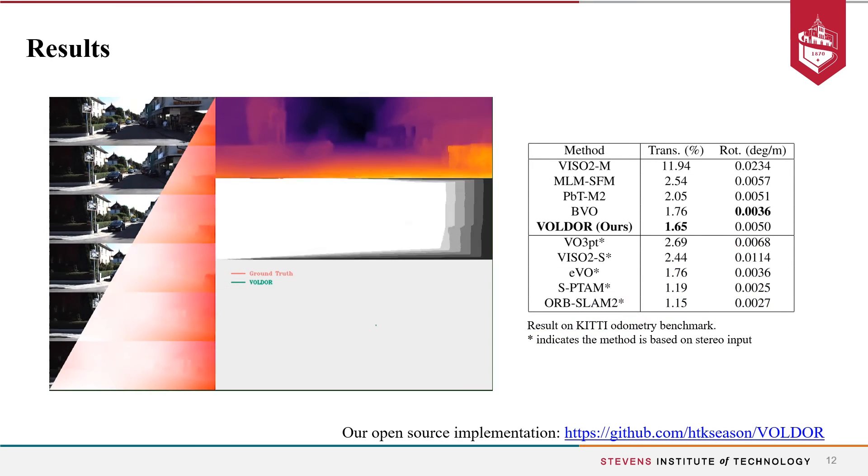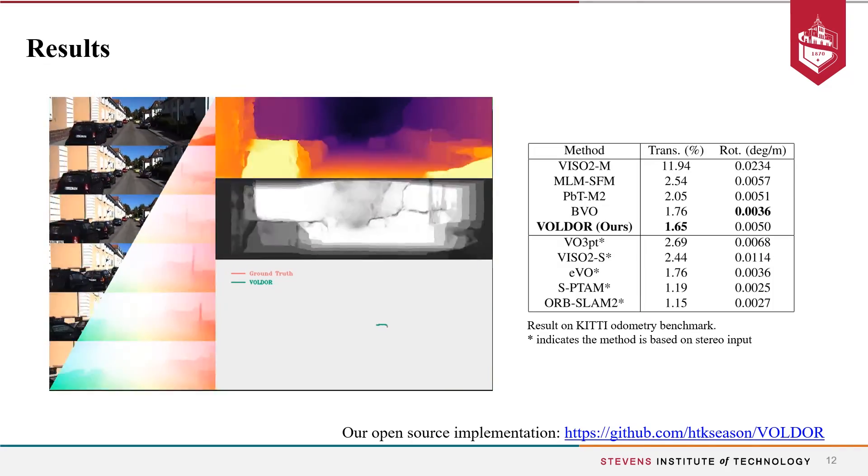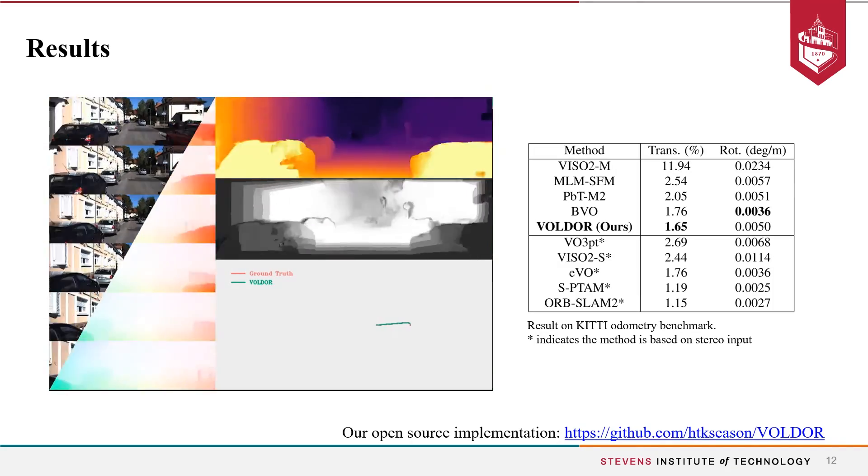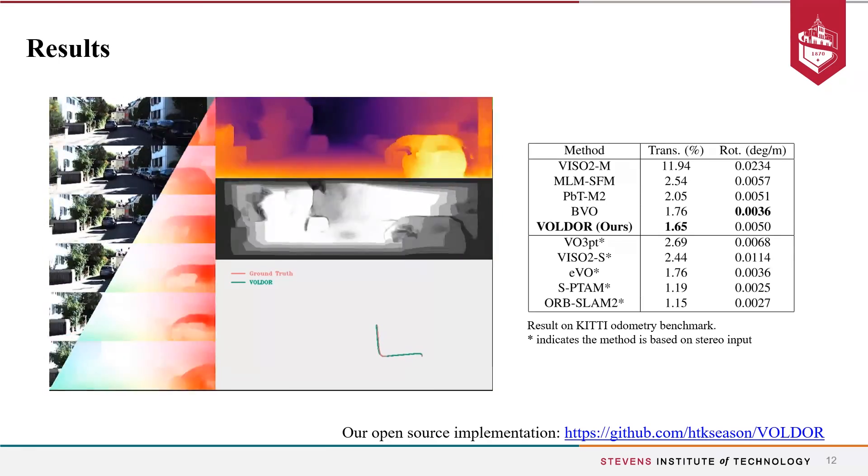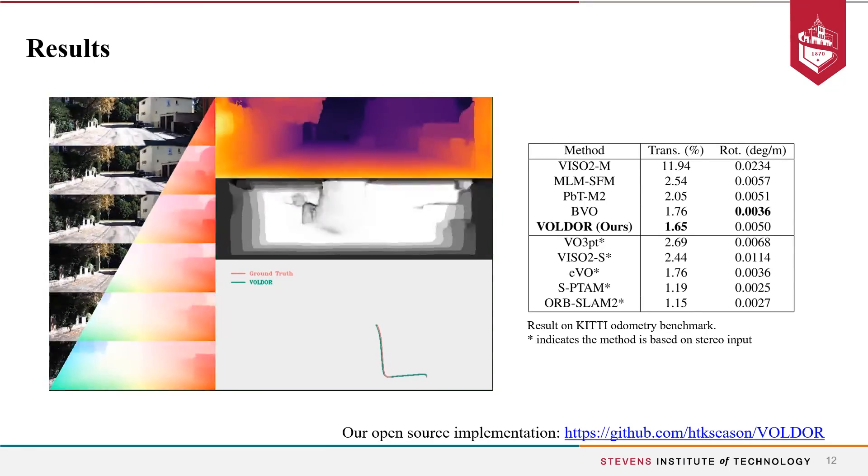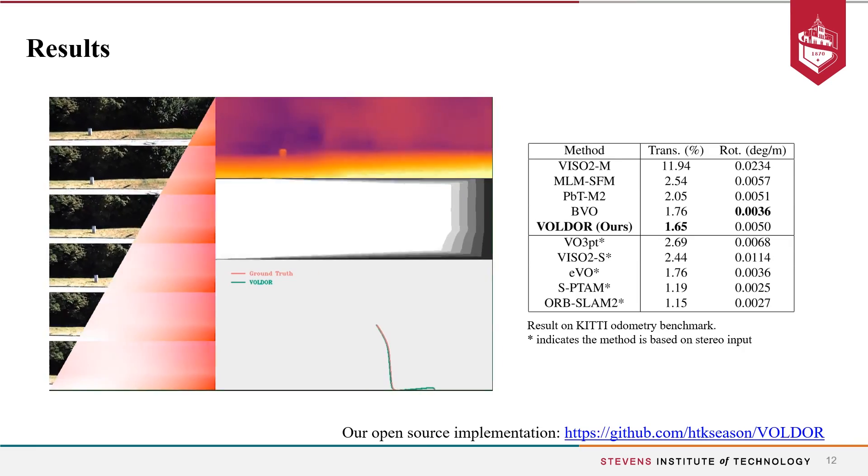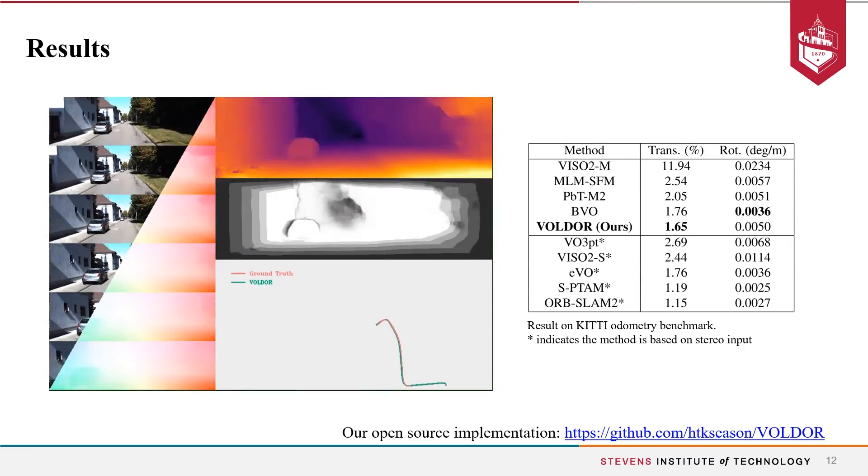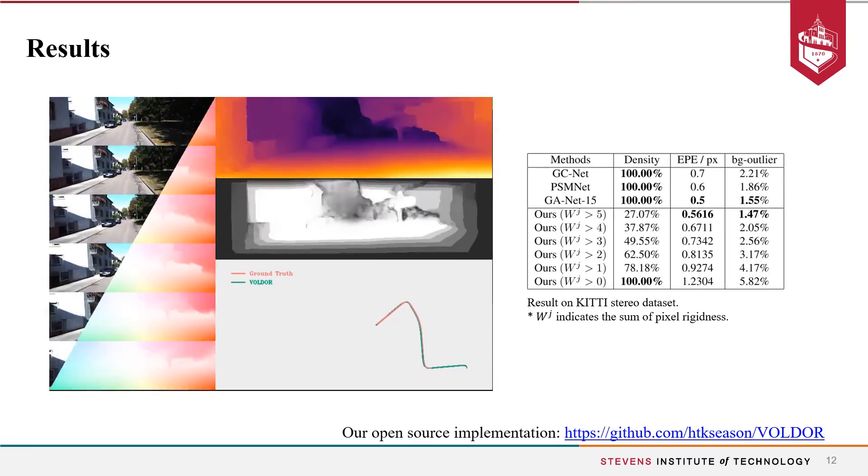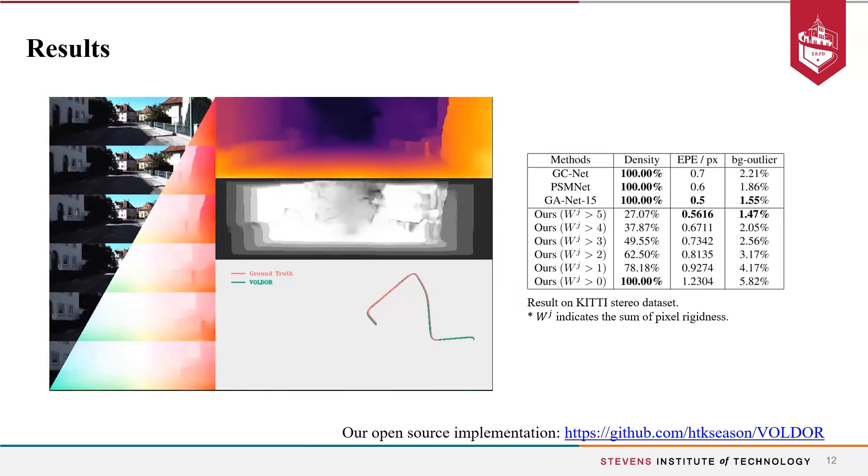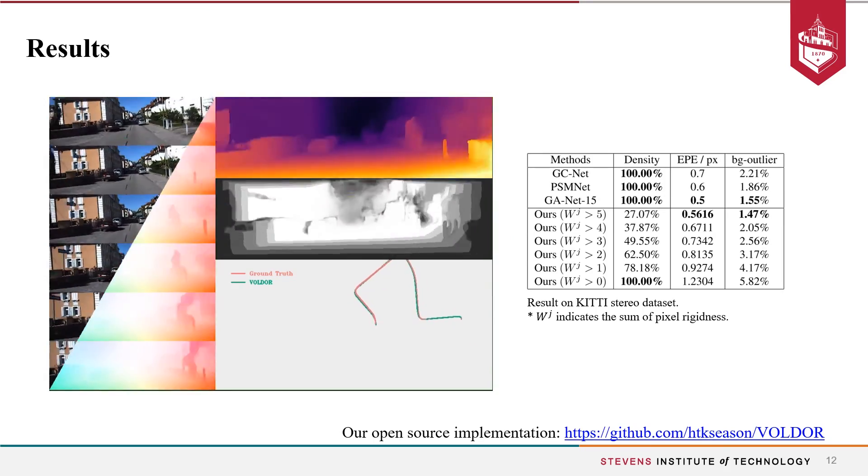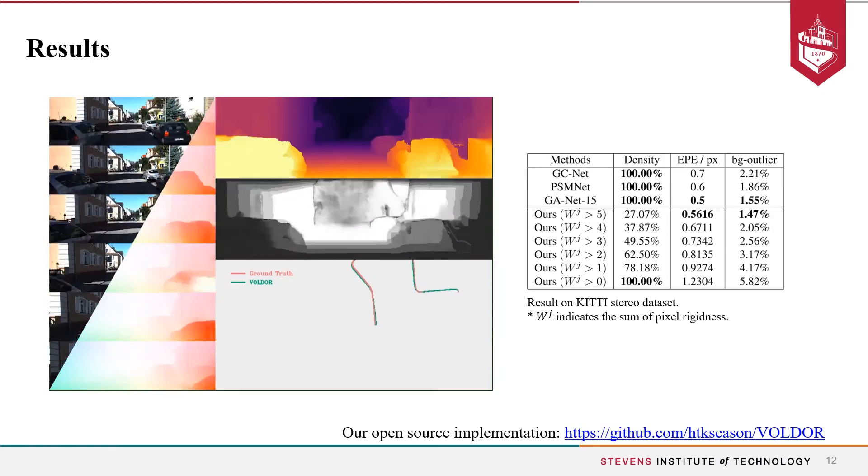Our method achieved state-of-the-art visual odometry accuracy among monocular view methods on KITTI dataset. We used the PWC-Net as our optical flow input, and the scale is estimated assuming fixed and known camera height from the ground. We also tested our depth map quality with respect to different pixel rigidness, where the subset of pixels with high rigidness have achieved satisfying accuracy.